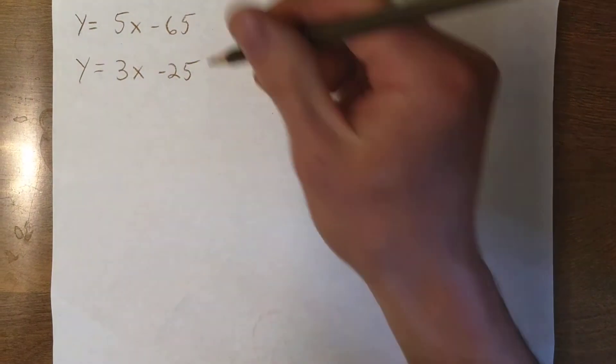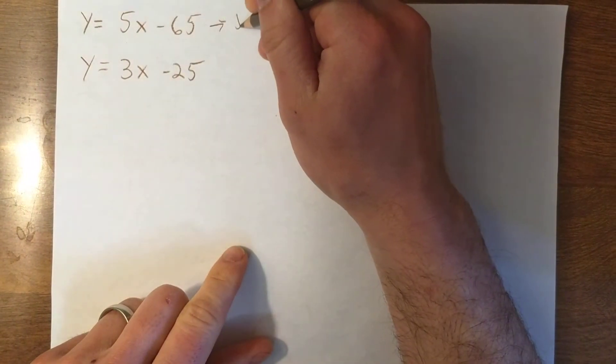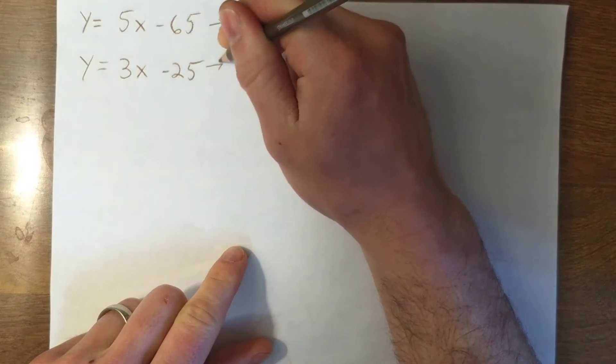Here are my two equations. This is Josie. This is Evan.